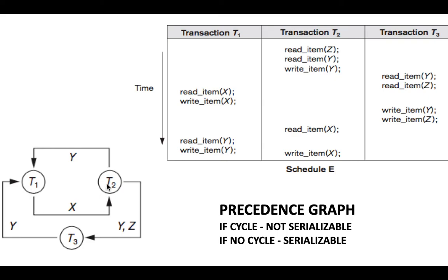Once we construct the precedence graph, we check whether there is a cycle. A cycle is like a circuit: going from T1 to T2 and back to T1 forms a cycle. There is also T3 to T1, T1 to T2, T2 to T3 — another cycle. If even one cycle exists in the precedence graph, the schedule is not serializable. If there is no cycle, the schedule is serializable.